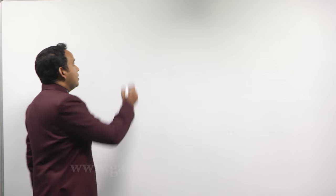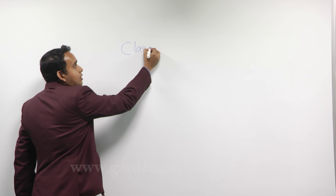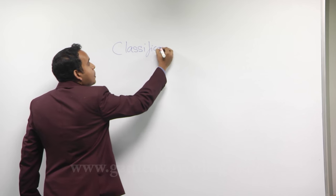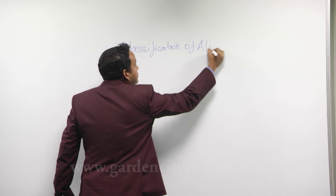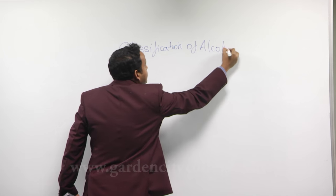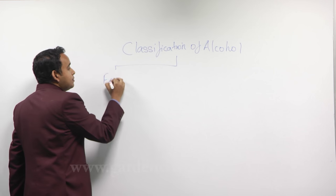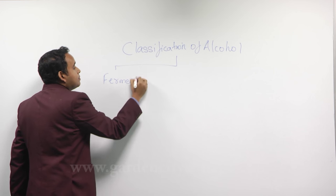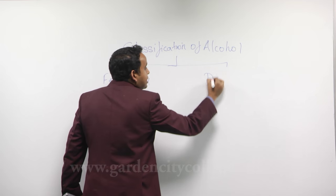When we start off learning about wines, what we need to know is the classification of alcohol. When we learn about the classification of alcohol, there are two types mainly: fermented alcohol and distilled alcohol.